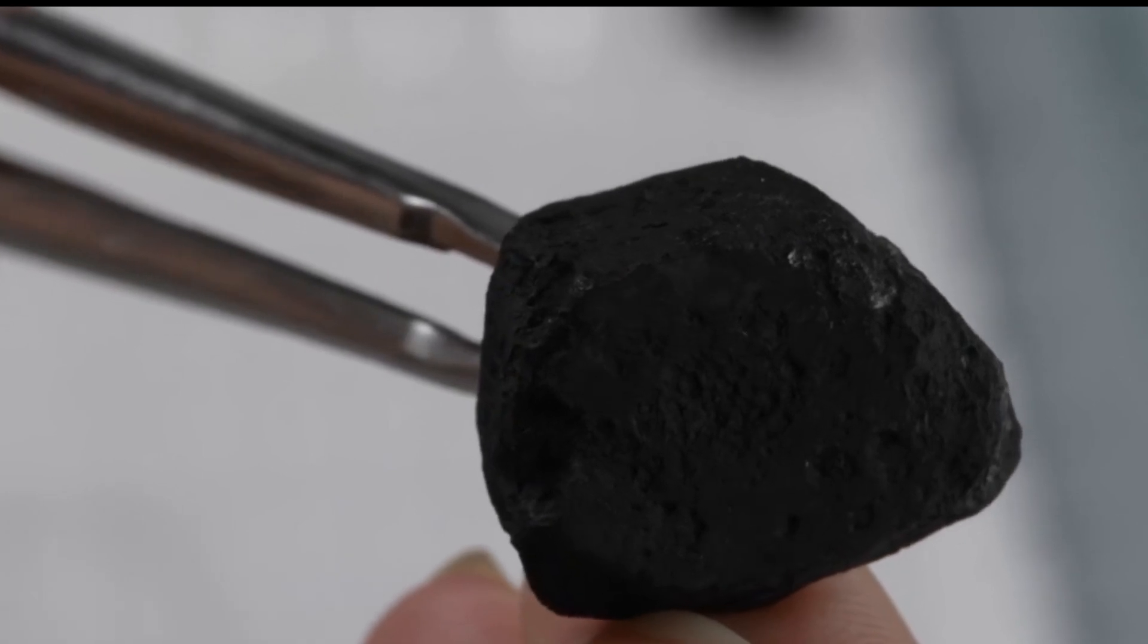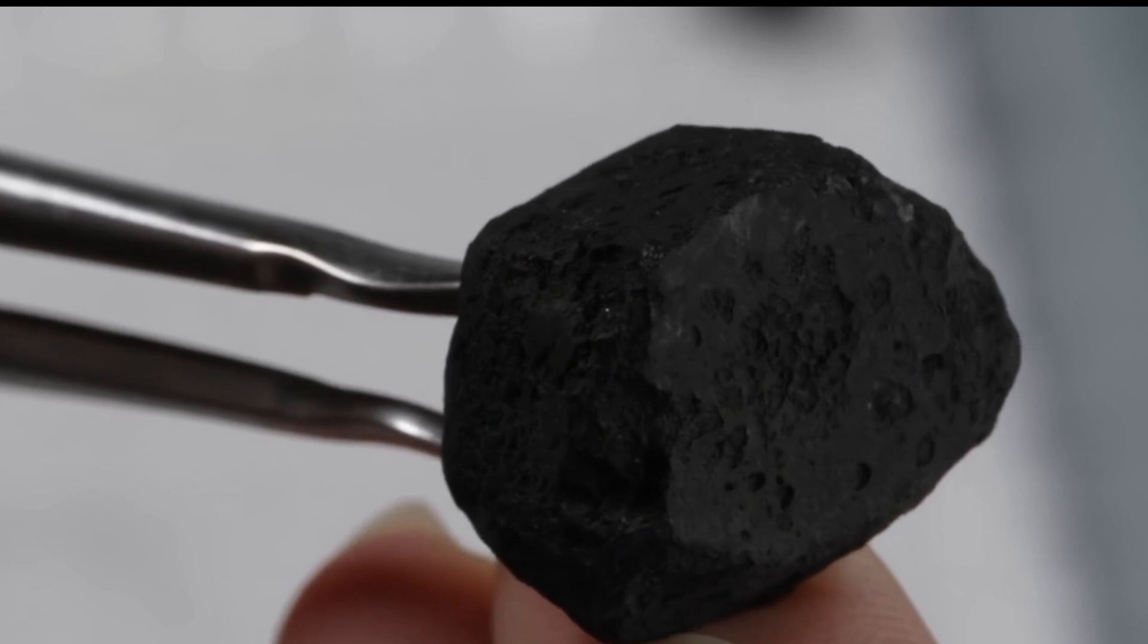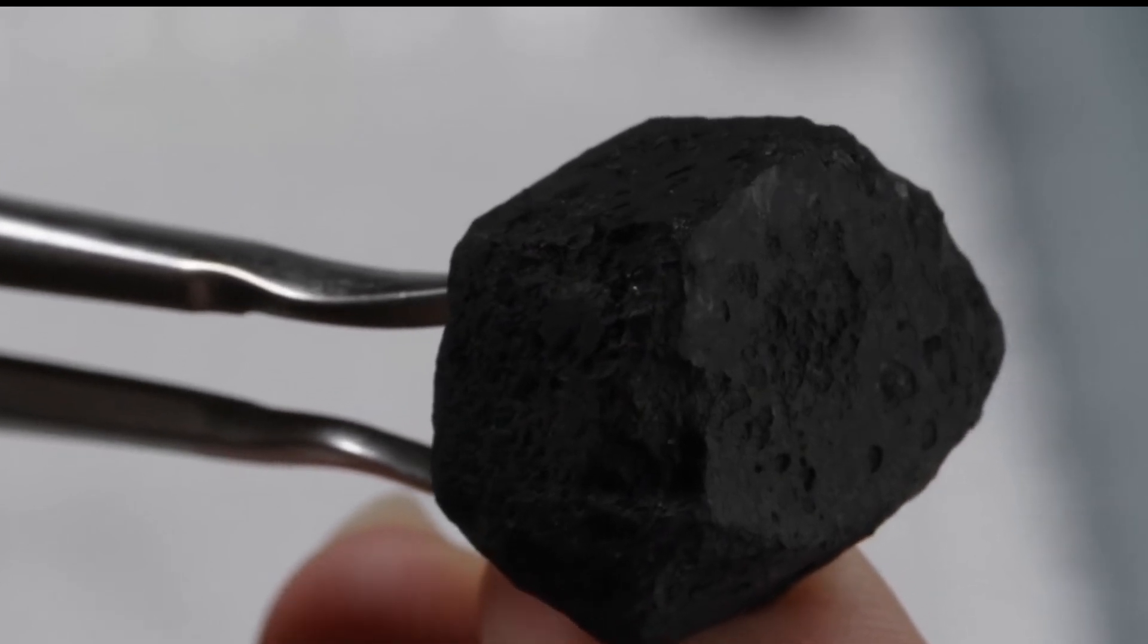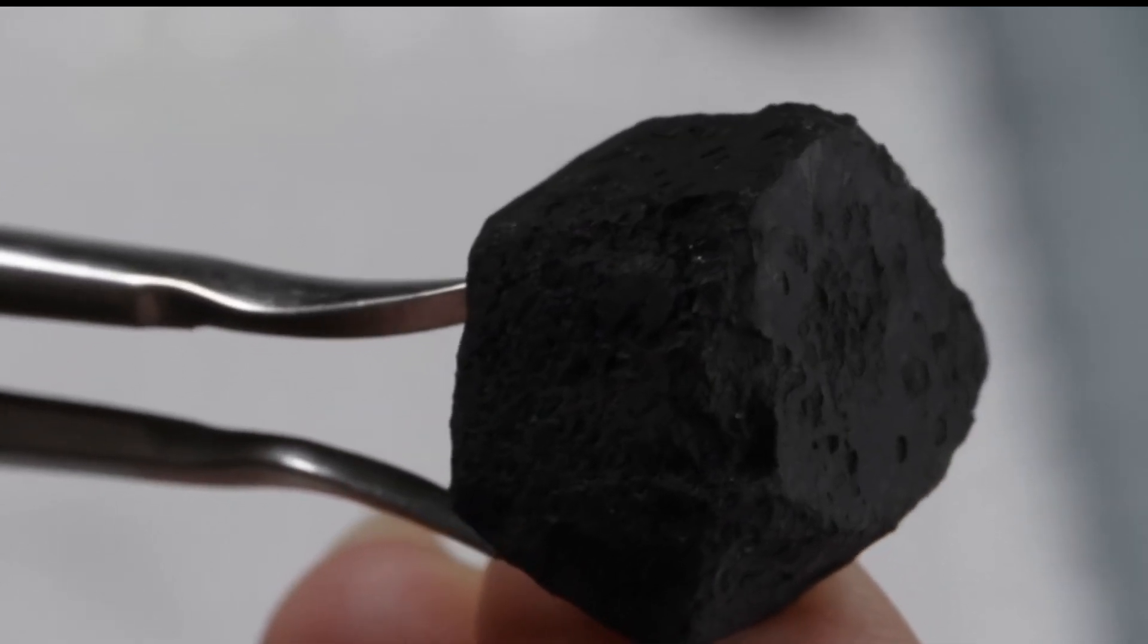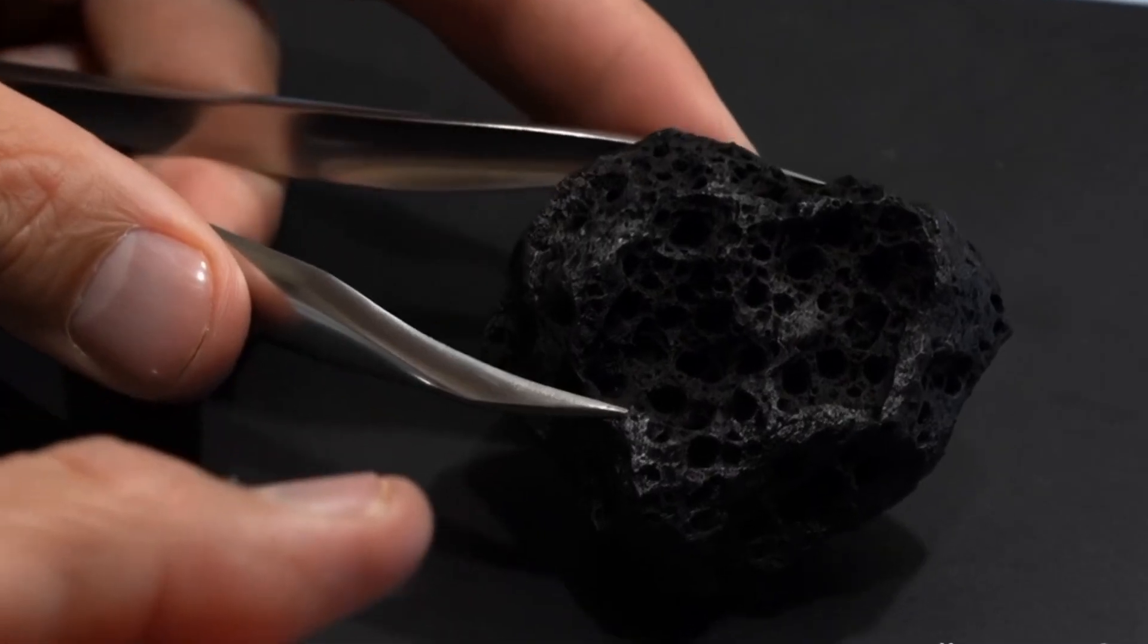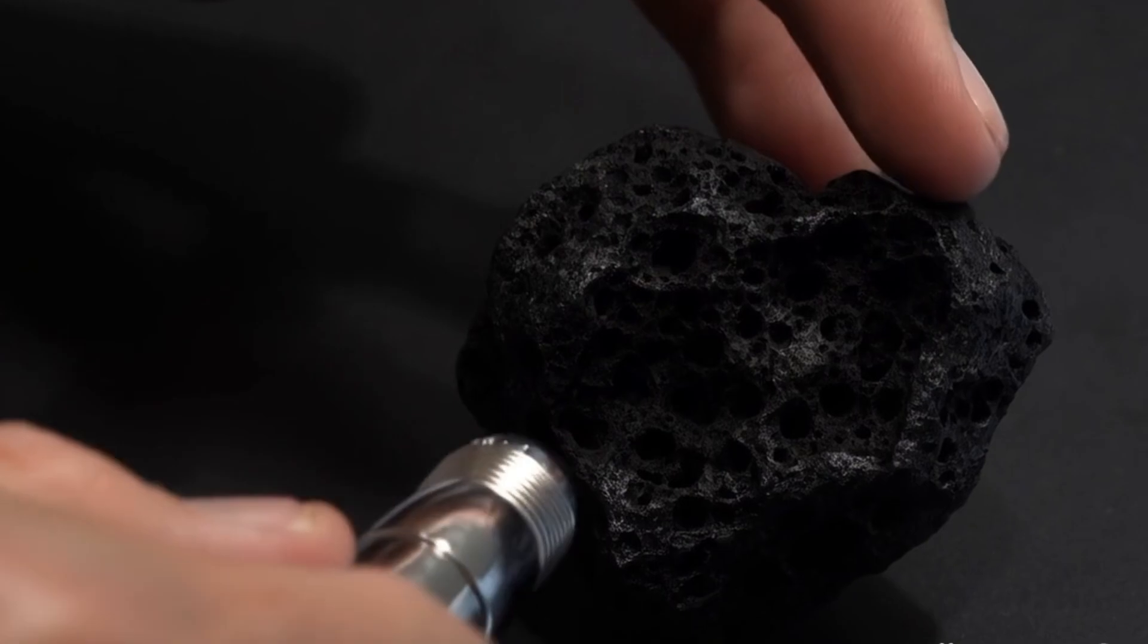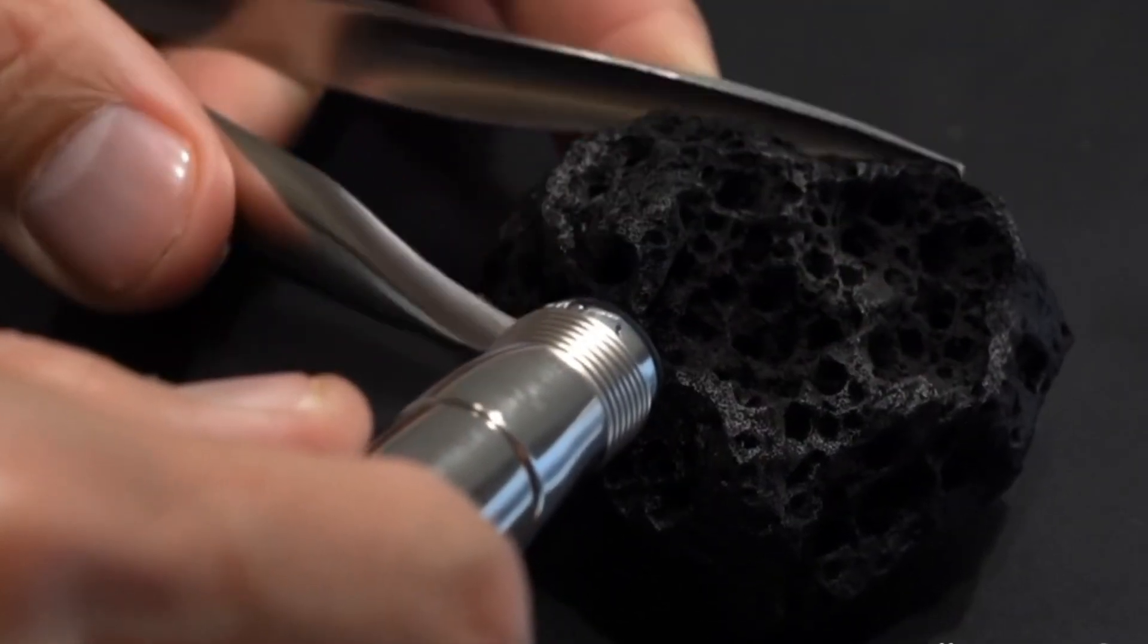Number 2: The fog test. Purpose: see if the stone resists fogging. Hold the diamond close to your mouth and breathe on it like you're fogging a mirror. Real diamonds disperse heat fast, so the fog should disappear almost instantly, within one to two seconds. If it stays fogged for more than three seconds, it's probably not a diamond.